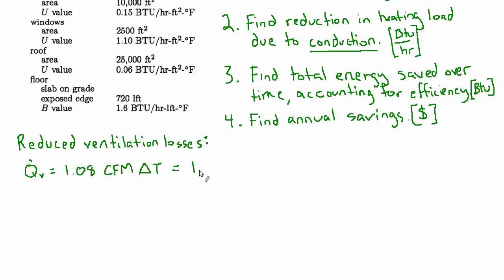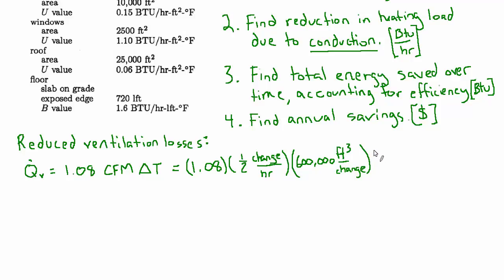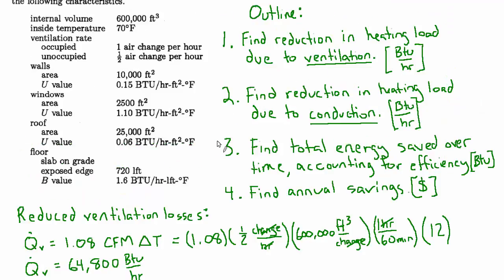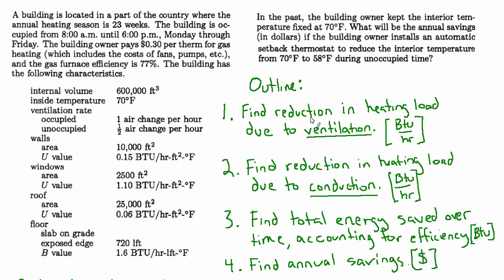Plugging in: 1.08 times half an air change per hour times 600,000 cubic feet per change, converting hours to minutes for CFM, times a delta T of 12 degrees. Units of change and hours cancel, leaving cubic feet per minute times degrees F, which always gives BTUs per hour. That works out to 64,800 BTUs per hour saved by not having to condition outside air during unoccupied hours all the way up to 70 degrees.